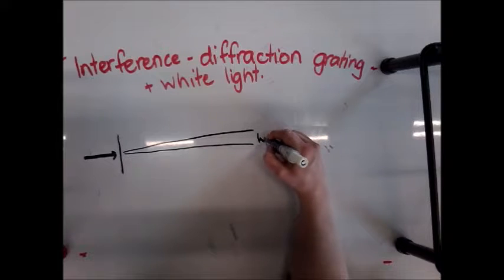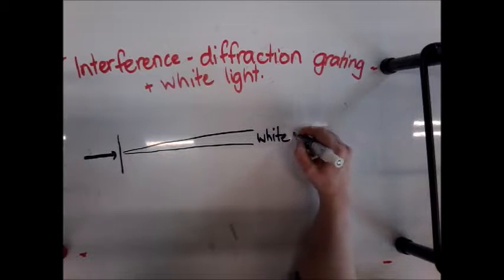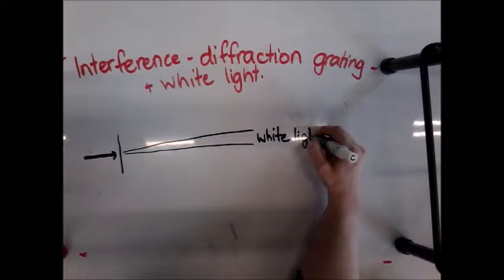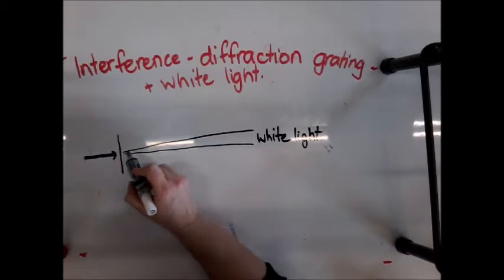And so what you get is you get a fringe of white light in the middle and then you get some spectra.